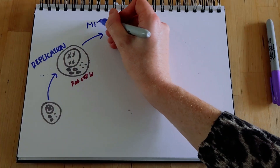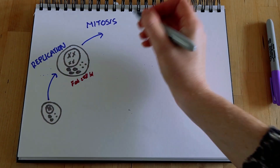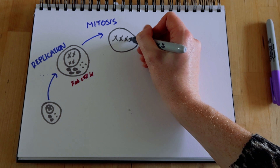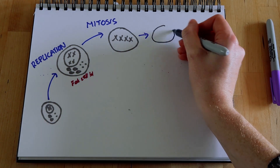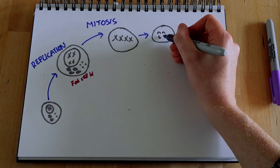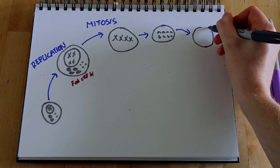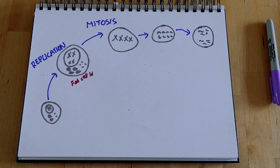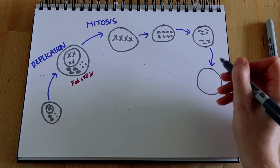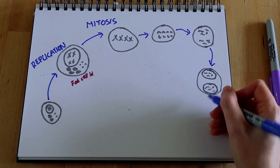The second stage is mitosis. This is where one set of chromosomes is pulled to each end of the cell and the nucleus divides. The chromosomes line up and separate, then they hang out at each end of the cell, and new nucleus membranes form around the chromosomes.